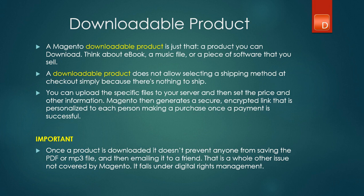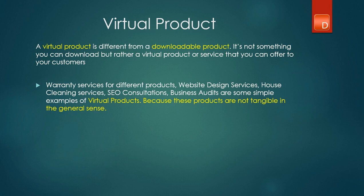The last product on the list is what you call virtual products. A virtual product is different from a downloadable product because it doesn't have anything you can download. Think of a service — for example, website design and Magento websites, a warranty service for your phone, laptop, or iPad, or a house cleaning service that you want to sell to people. These are examples of virtual products that you can use in Magento.